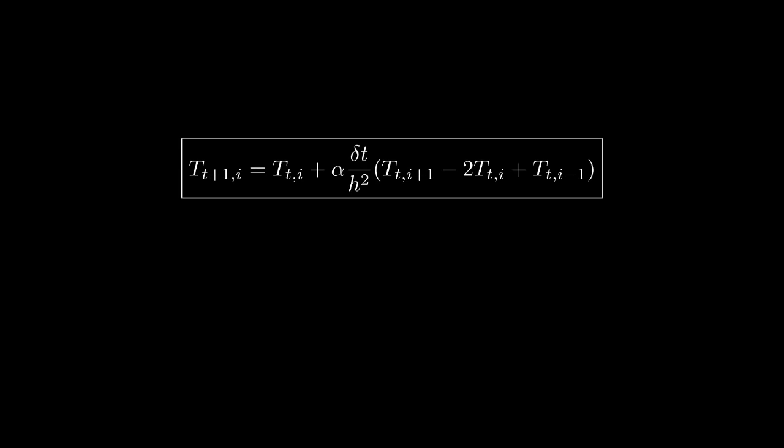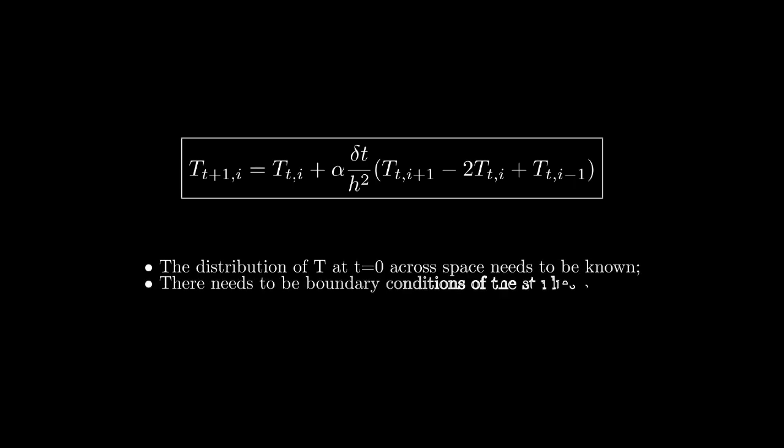You might ask, why did we consider the forward derivative for the time and not the other ones? Well, in practice, knowing how a certain model behaves currently, so at t equals t₀, we want to predict its future behaviors, so at t equals t₀ plus dt. Simply. There are two things you have to keep in mind, though, to be able to compute this expression. The first thing is that the distribution of the temperature at t equals zero across space needs to be known, and there needs to be boundary conditions of the studied space, so you can compute the terms next to the boundaries.